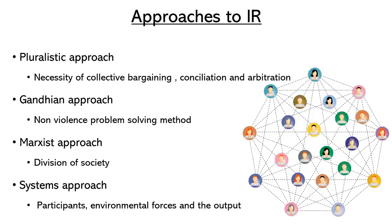Systems approach: there are three major elements in an organization — employers, employees, and a solution, along with government and trade unions. Each and every category should be approached systematically, so that a positive result can come. Management should have a systematic approach toward employees, and trade unions should have a systematic approach toward management, thereby maintaining a harmonious relationship. If you have any doubts, please leave them in the description box below.